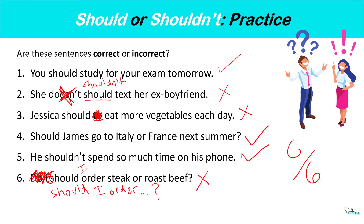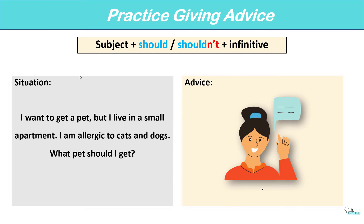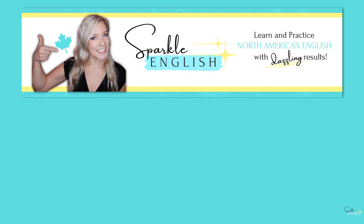Let me know in the comment section how many you got correct out of six. Now I want you to practice giving advice in the comments. Here's the situation: I want to get a pet but I live in a small apartment, and I am allergic to cats and dogs — what pet should I get? Give your advice using should and shouldn't. Thank you for watching! Make sure to subscribe to Sparkle English for more English lessons, and I will see you in my next lesson.